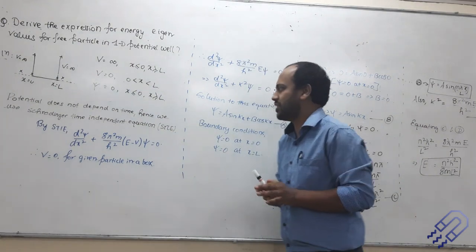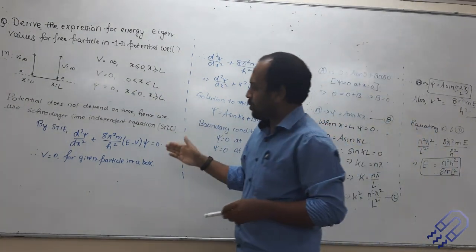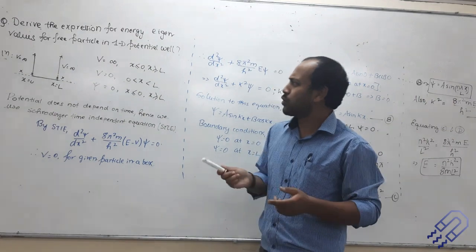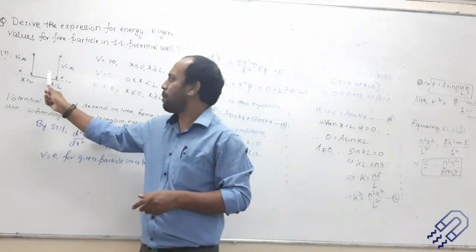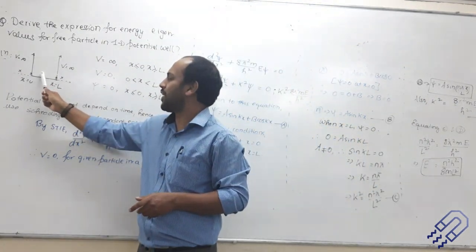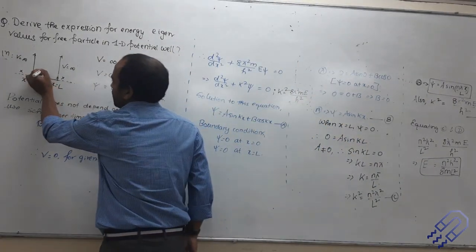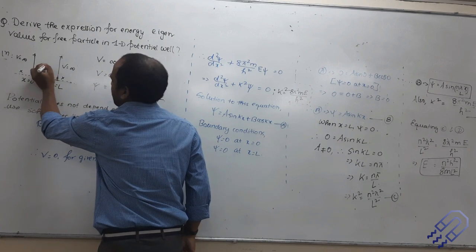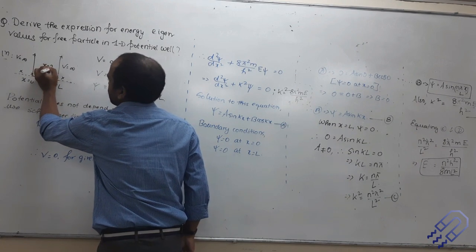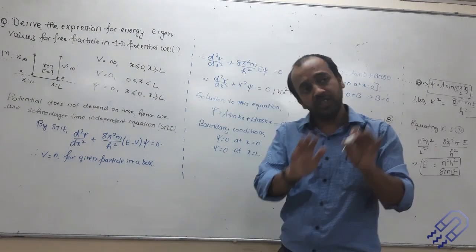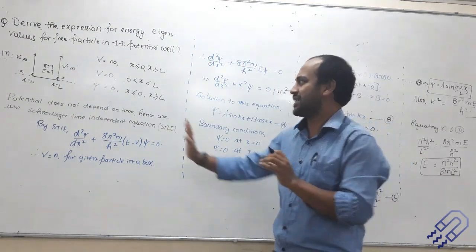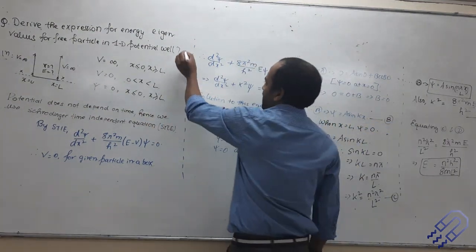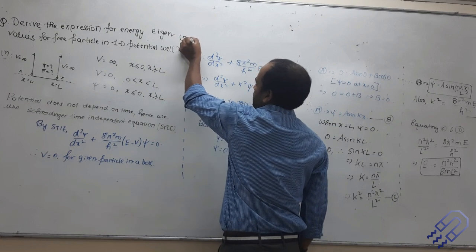So that is very important, and that's why we start with Schrödinger's time-independent equation. Now what I want to find is: if a particle is confined inside this box, what will be its energy, and what will be the wave function associated with it? That is the aim of this problem. This question might carry around 5 to 8 marks — maybe you are just finding the energy for 5 marks, or finding the wave function as well for 8 marks.